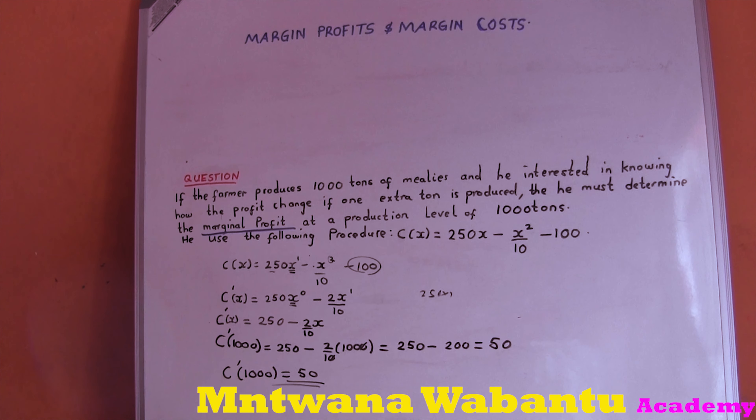So C prime of x equals (3/8)x^(-1/2) - 70x⁶. To get marginal cost or marginal profit, you must find the derivative first. Now let's go back to our main questions.